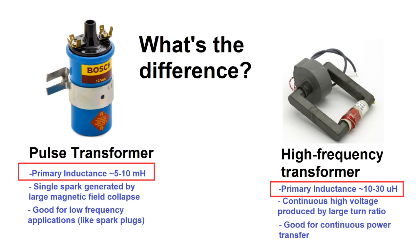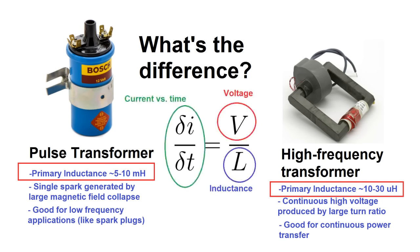The inductance also affects how quickly a coil will reach peak current, as shown by this formula. Larger inductance causes current to ramp up much lower. Let's have a closer look at that in a simulation.